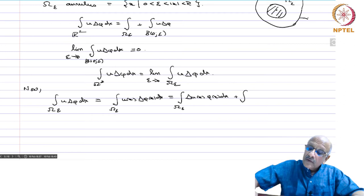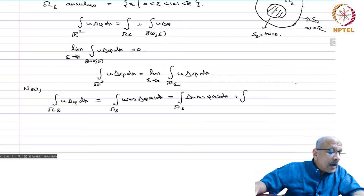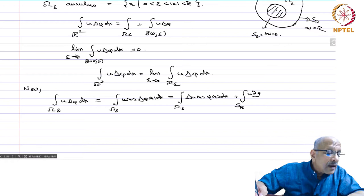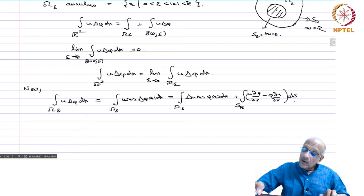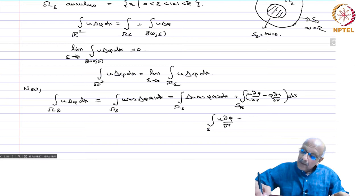Let S_R = {|x|=R} and S_ε = {|x|=ε}. The boundary terms are: integral over S_R of (u ∂φ/∂r − φ ∂u/∂r) ds, plus the integral over S_ε of (u ∂φ/∂r − φ ∂u/∂r) ds (with a sign from the inward normal). The inner normal to Ω_ε on S_ε points toward the origin, so we put a minus sign on ∂/∂r for the outer normal derivative.